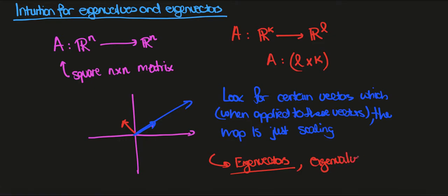So if it's doubled, the eigenvalue would be 2. If it's halved, it would be an eigenvalue of 1/2.